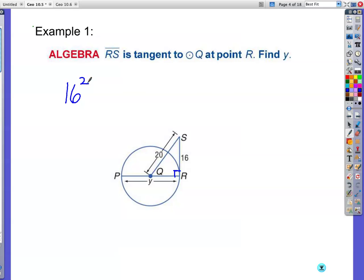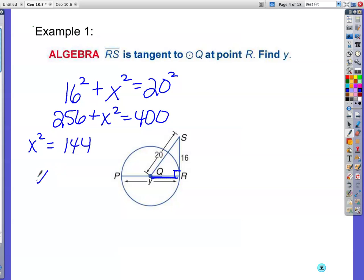This forms the 90-degree angle. So that means I have a right triangle. I know two of the three sides, so I will use Pythagorean theorem. So 16 squared plus, I don't know what this is, I'm going to call it x, equals 20 squared. So I go ahead and do all kinds of math. 16 squared is 256, plus x squared equals 400. Subtract 256 from both sides, I'm getting 144. That means x is equal to 12.